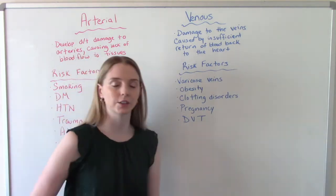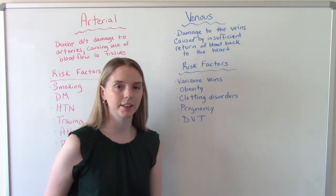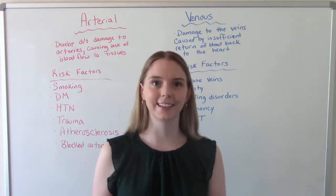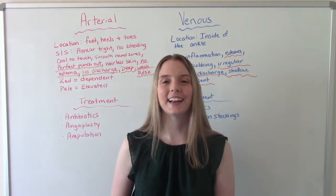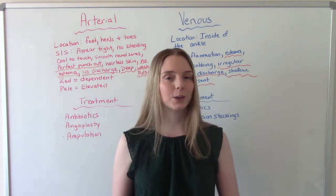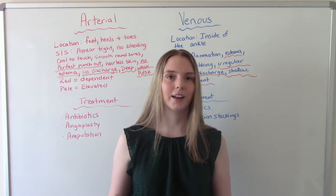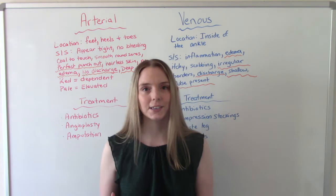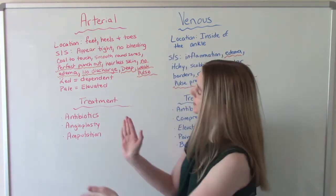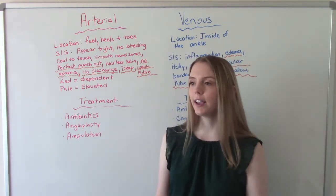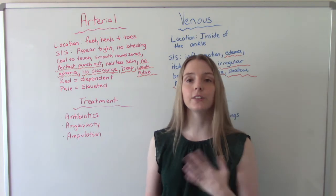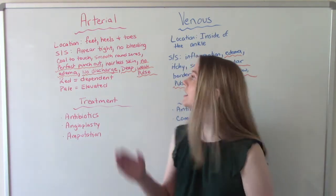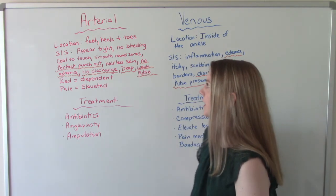Additional venous ulcer risk factors include having a DVT — a deep vein thrombosis, which is a blood clot in your lower extremity. Now let's compare the signs and symptoms. You're going to notice they're very different from one another, and that's going to help you remember better. Starting with arterial ulcers, they're usually located on the outside of the ankle, the feet, the heels, and the toes.